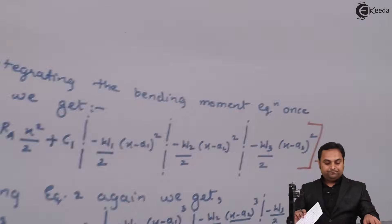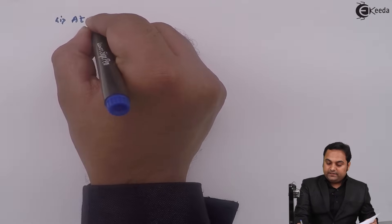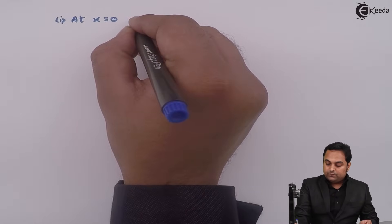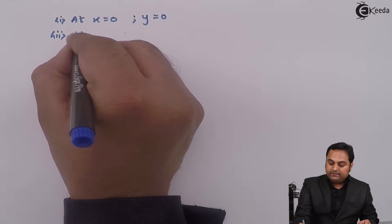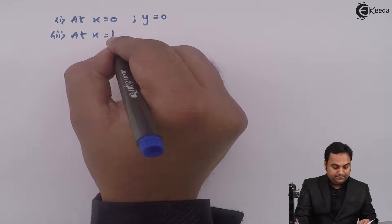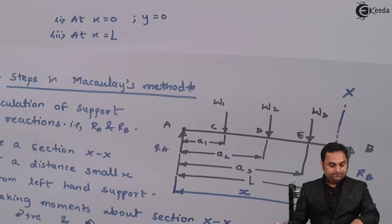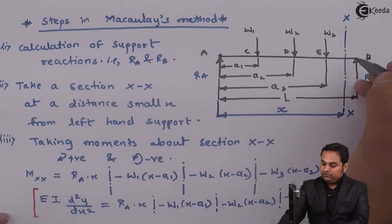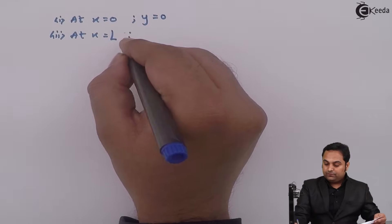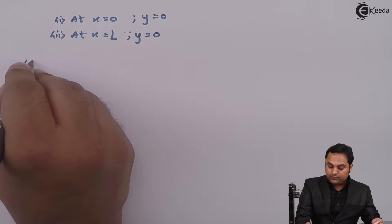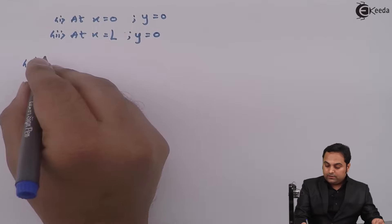Looking at the diagram, the boundary conditions are: when distance x is zero, deflection y is zero. So the first boundary condition is at x equals 0, y equals 0. The second boundary condition is at x equals capital L, y is again 0 — deflection is zero at both supports.